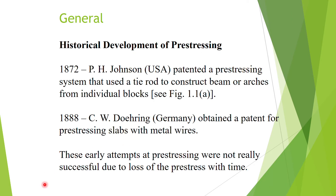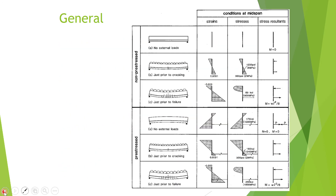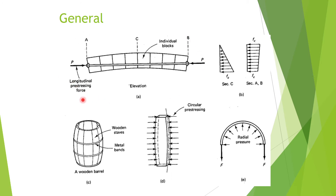Next, let's look at the historical development of pre-stressing. Pre-stressing actually started in 1872 with a patent by P.H. Johnson in the United States. This patented system used a tie rod to construct beams or arches from individual blocks, where individual blocks were tied together into an arch or beam capable of carrying loads.